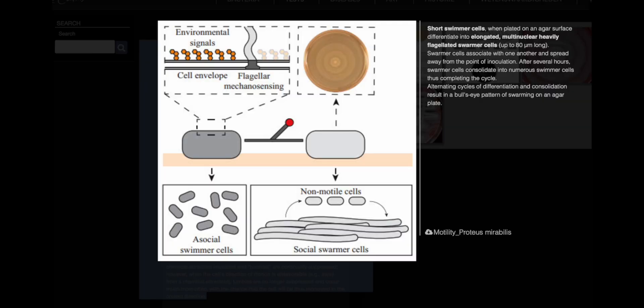Flagella arrangement. Proteus mirabilis has a peritrichous flagella arrangement, meaning the flagella are distributed all over the cell surface.